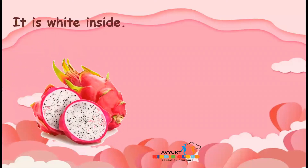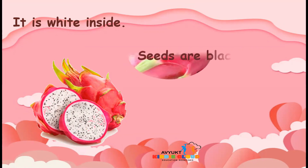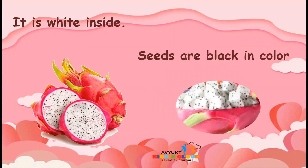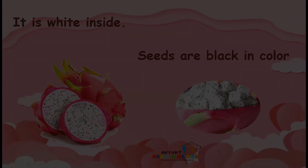As you all can see, the dragon fruit is pink from outside and white inside. The seeds are black in color. The small, small seeds as you all can see inside are all black in color.